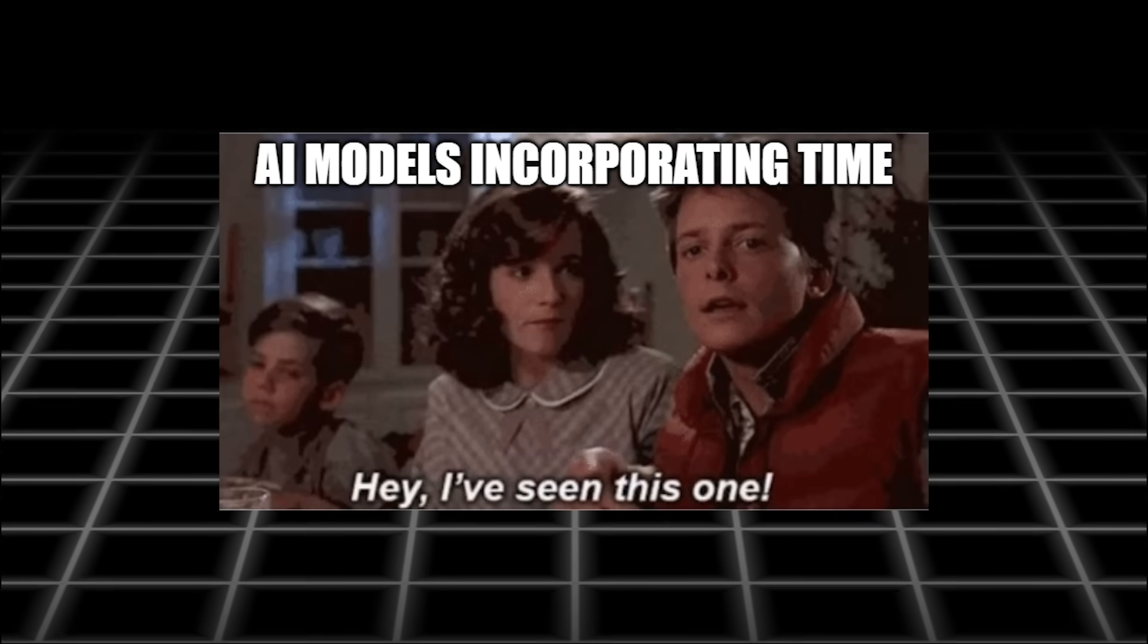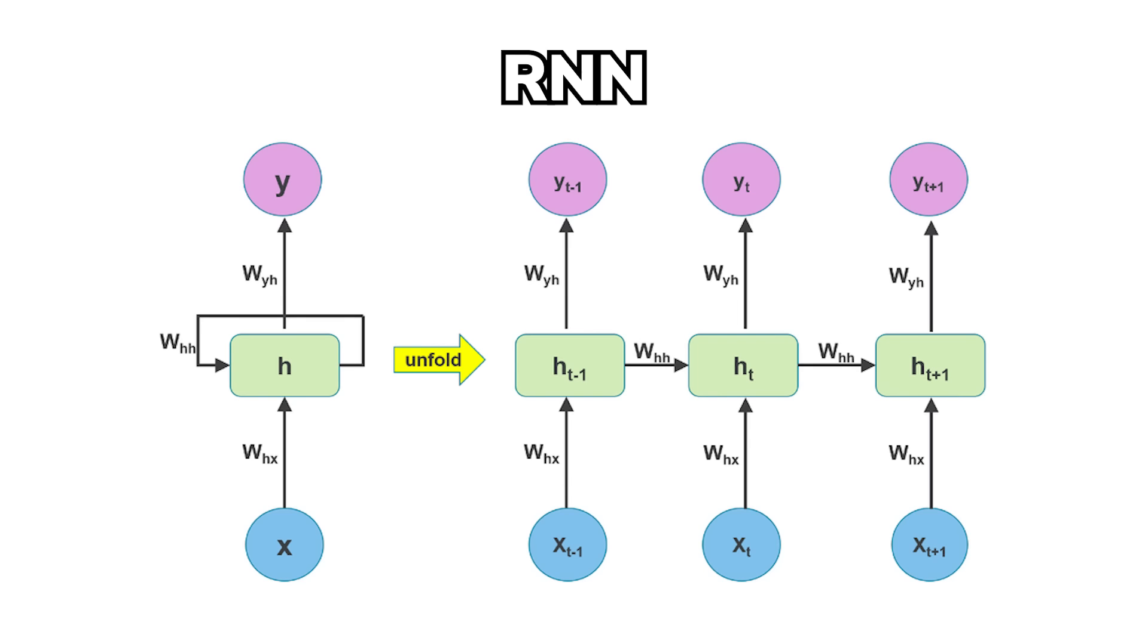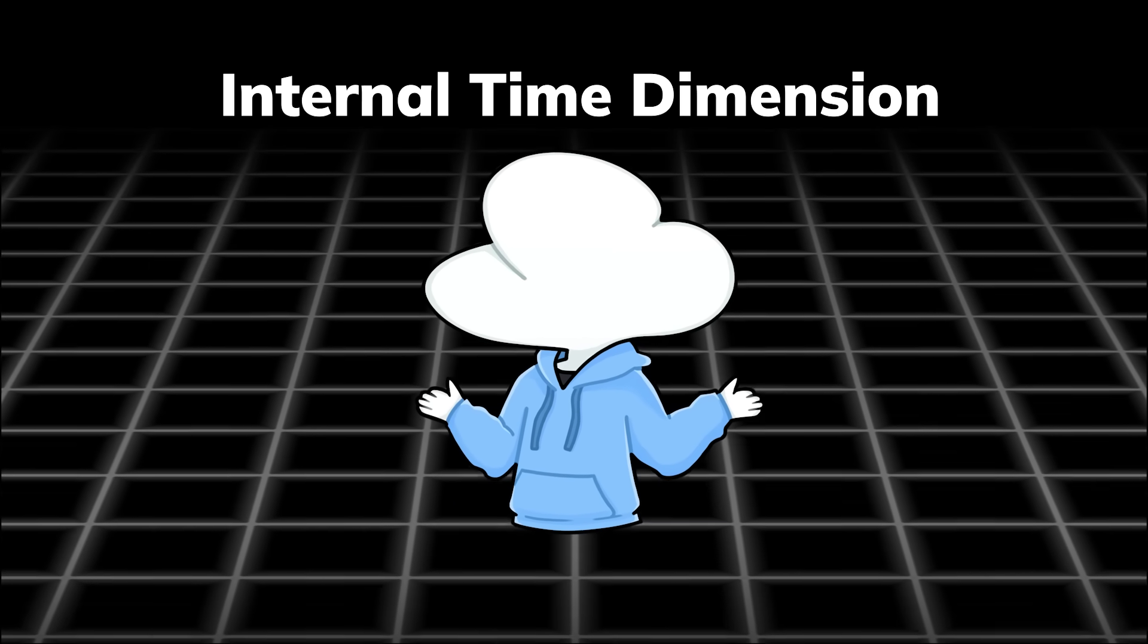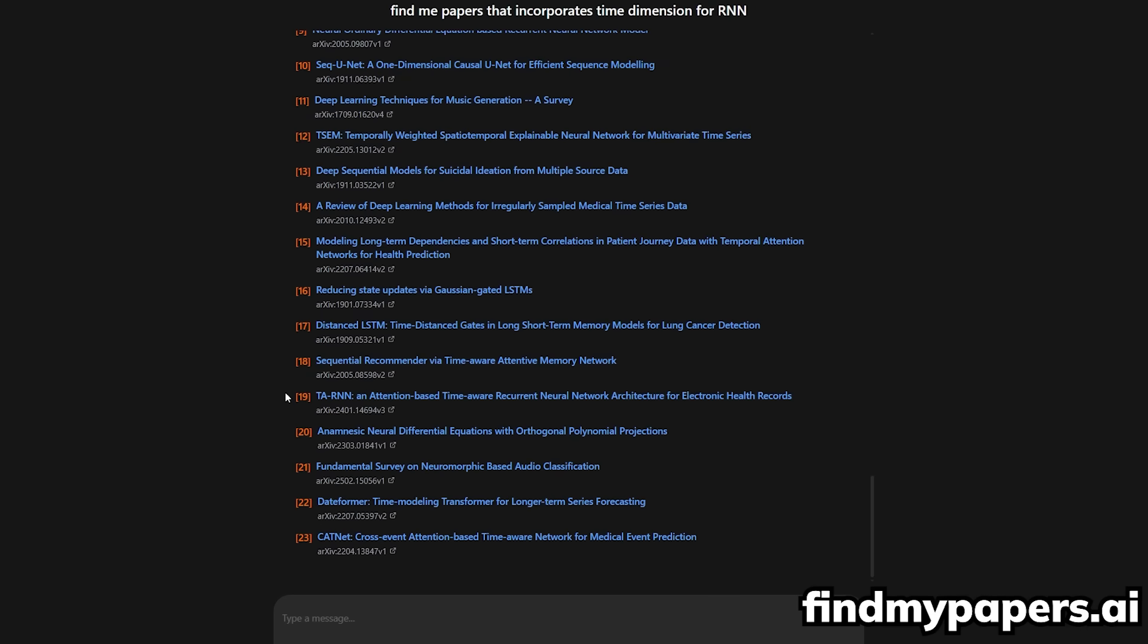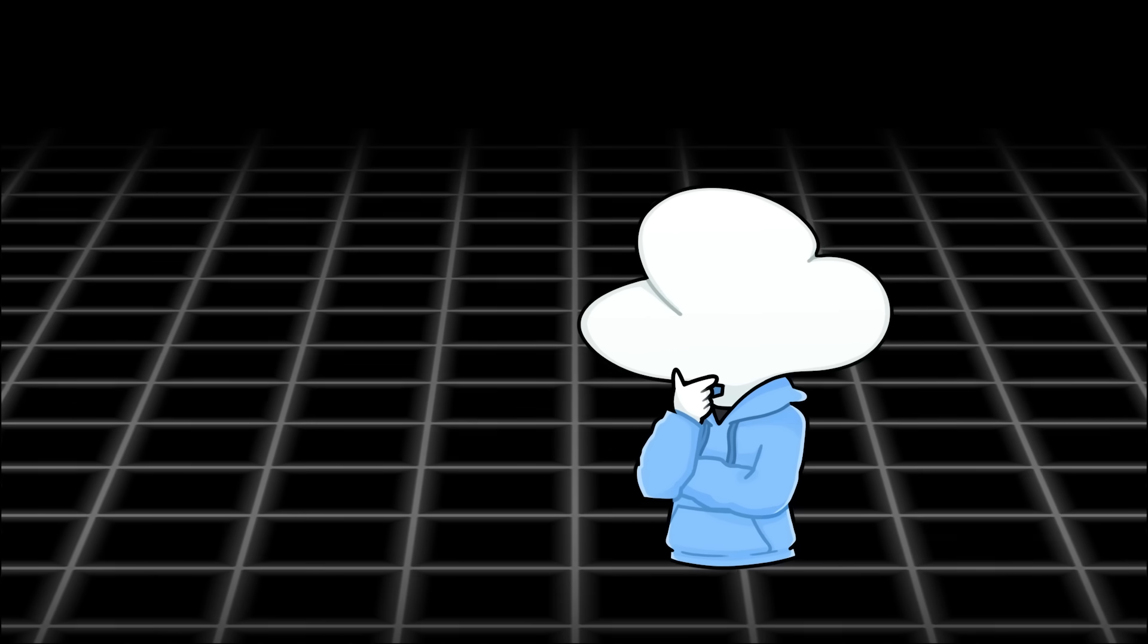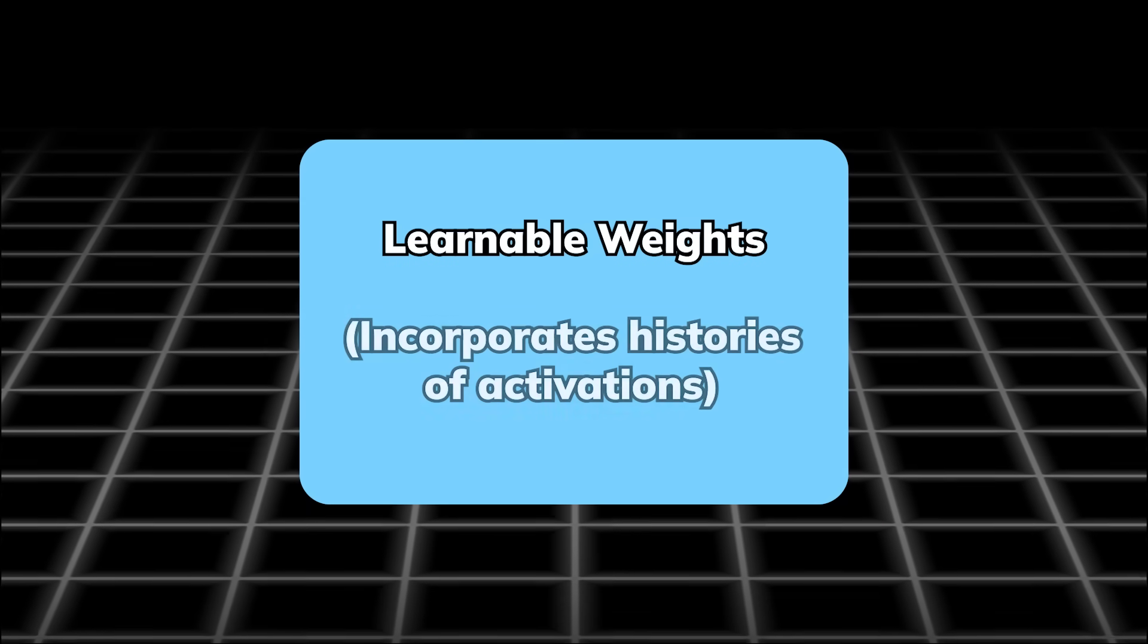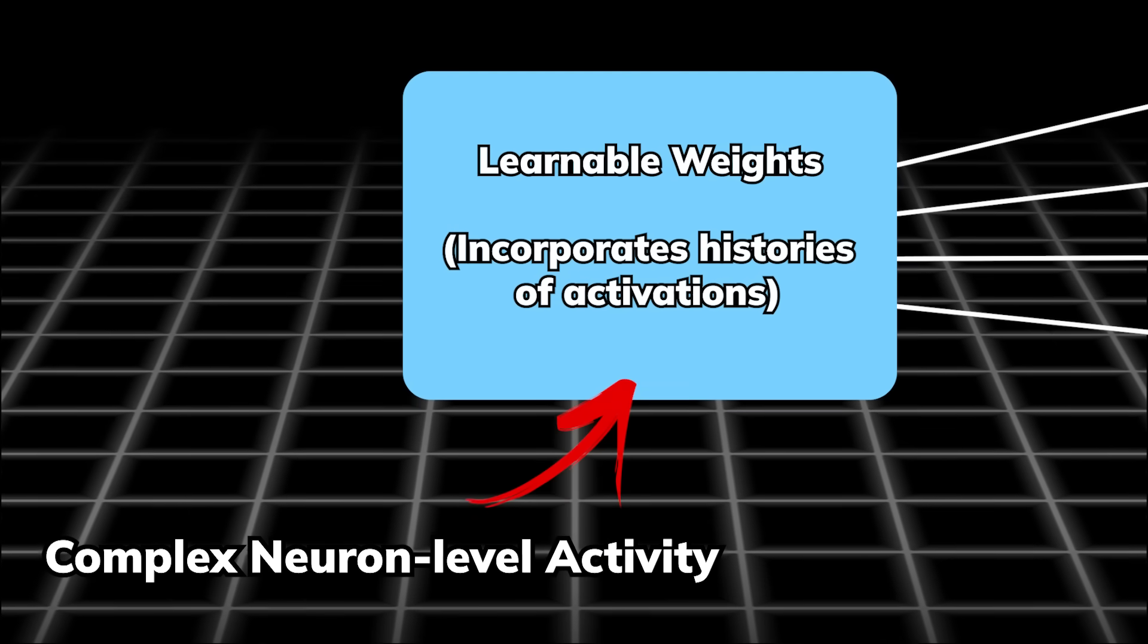Anyways, AI models that incorporate time are not something completely new. For recurrent neural networks, you can set it up to incorporate an internal time dimension that is separated from the data. And if you want to find papers like that, just check out my website findmypapers.ai. However, the CTM differs in two major ways. One is, instead of using the conventional static activation functions, CTM has these complex, learnable ways that would also incorporate histories of activations which can produce complex neuron-level activity.